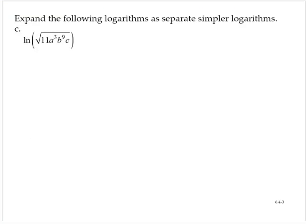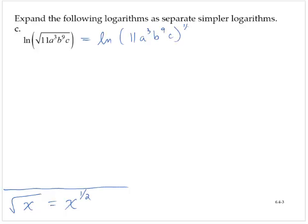Let's look at part C, where we're given the natural log of the square root of 11a cubed b to the ninth c. First, we need to recall that the square root of a number can be written as the number to the one half power — one of our rules for exponents from a previous chapter. So I can write this as the natural log of the quantity 11a cubed b to the ninth c, all to the one half power.